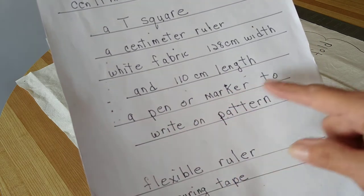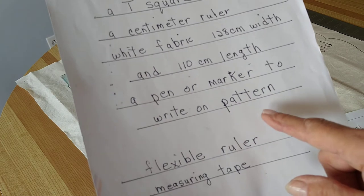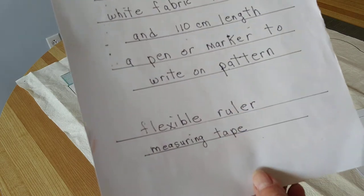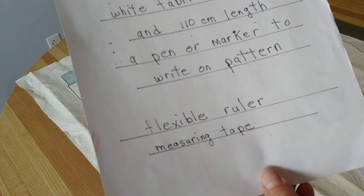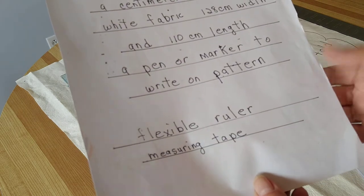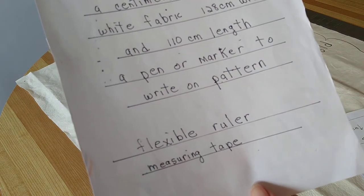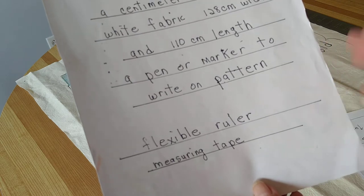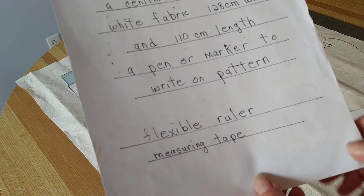You'll need a pen or a marker to write on the pattern and you'll need a flexible ruler or one ruler that has at least 103 centimeters on it because that's the length of the pattern.